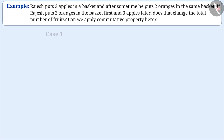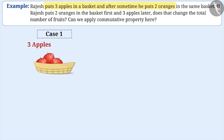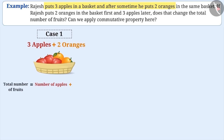Case 1: Keeping three apples first and then two oranges in the basket. Total number of fruits equals number of apples plus number of oranges, which is three plus two, that is five.